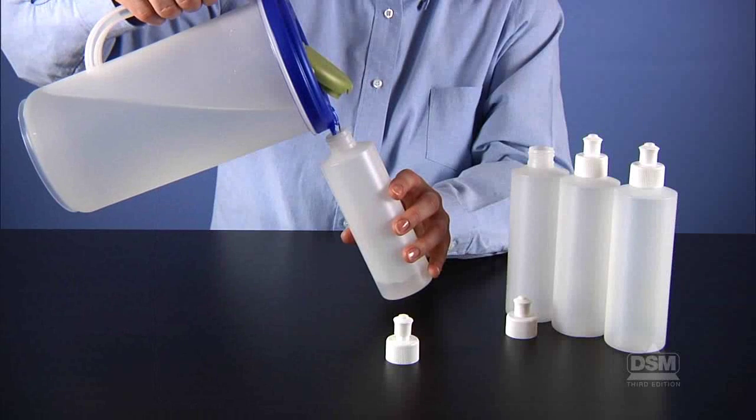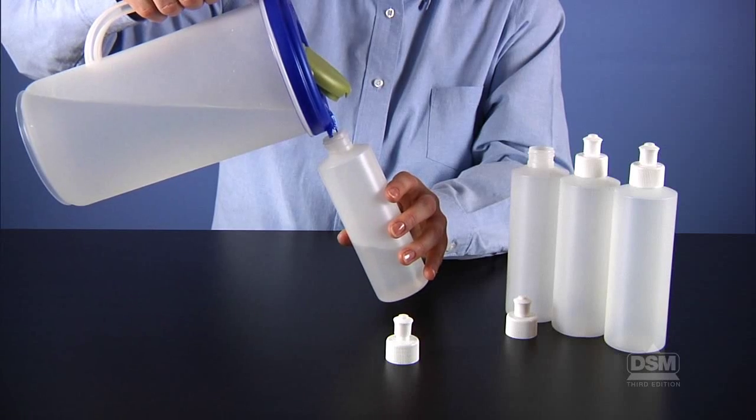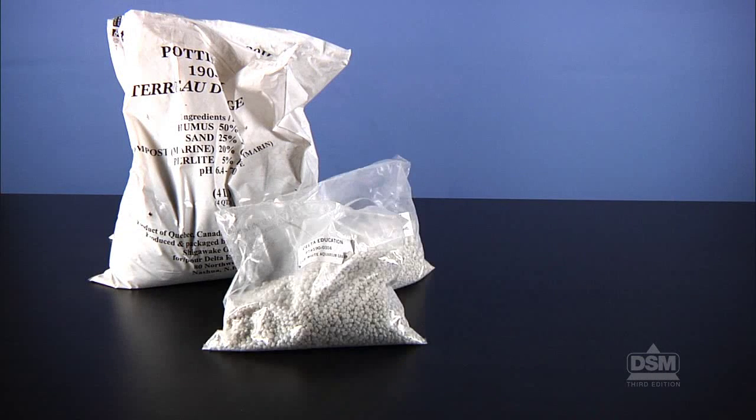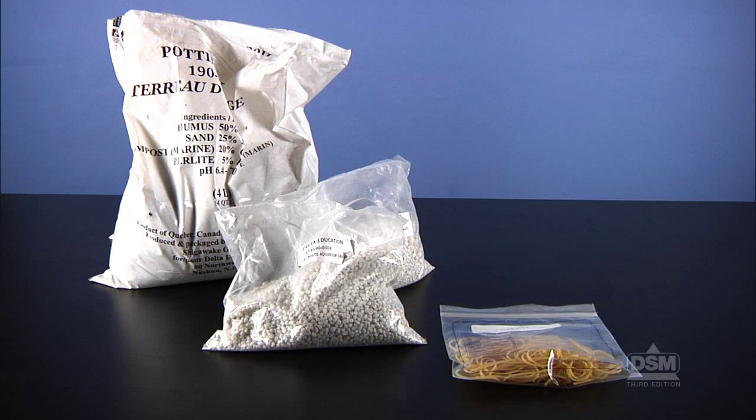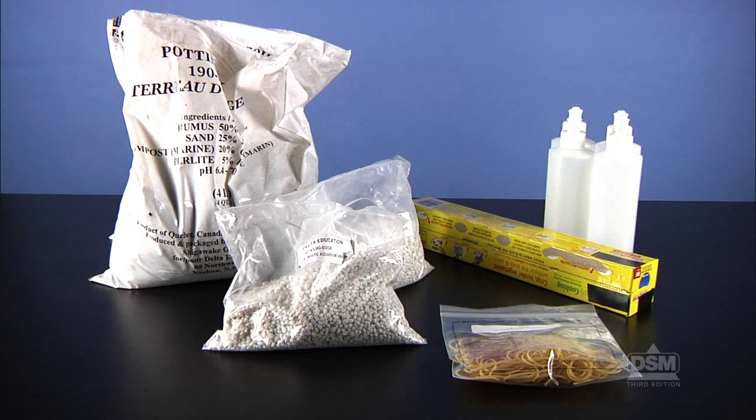Fill the water sprinklers with tap water and set up a distribution station with potting soil, gravel, rubber bands, plastic wrap, and water sprinklers. Also have enough dried peas for each student to have some.